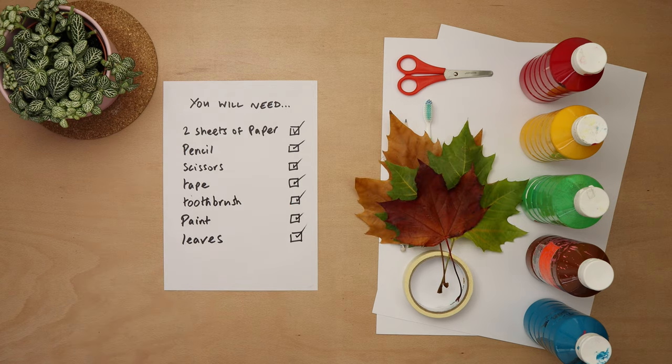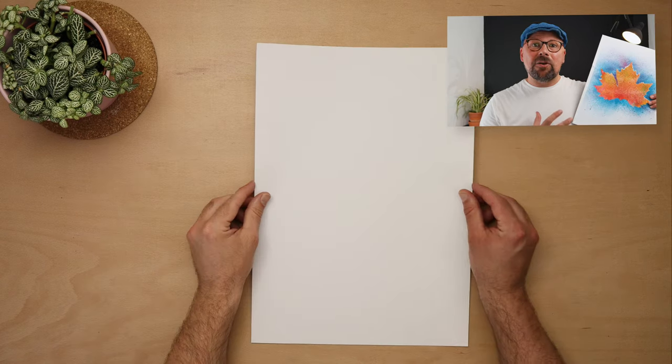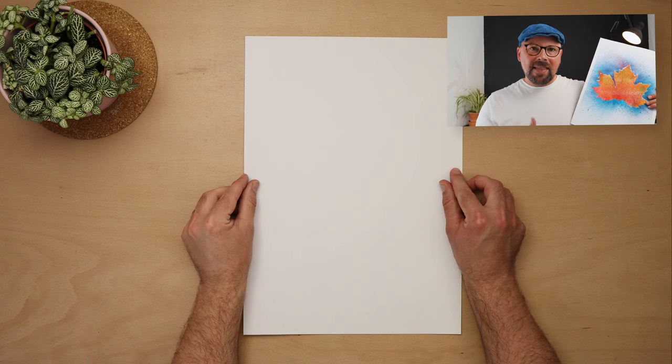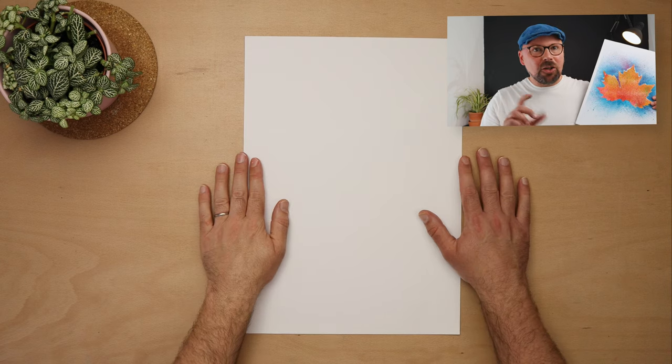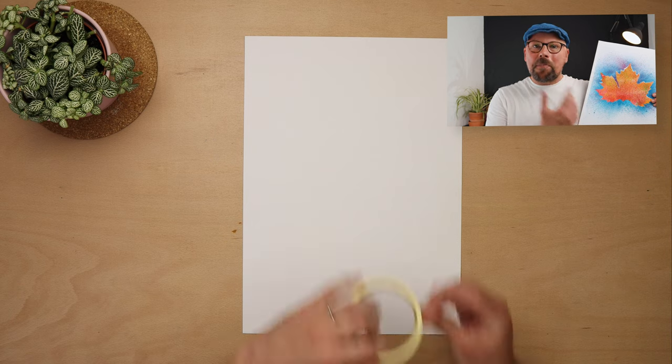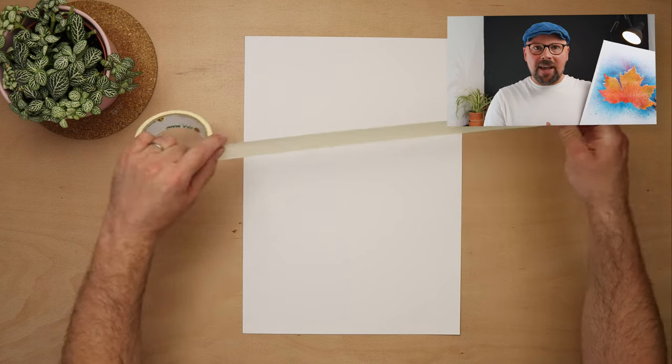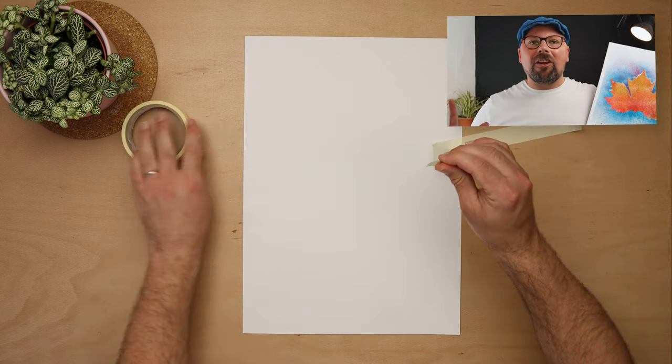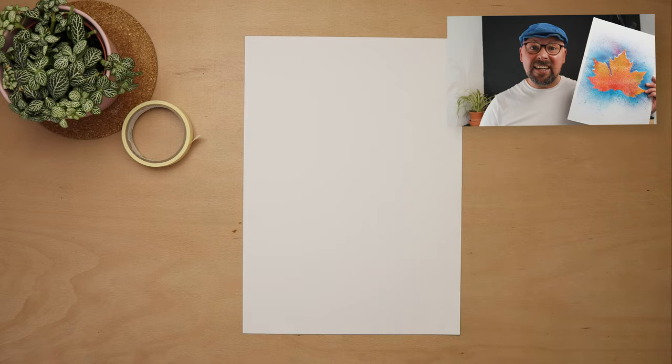Now this could not be easier to make but it's full of skills that young people should be learning. There's a bit of spray painting in there with the toothbrush not with a can, there's cutting out, there's stenciling, there's pattern making, there's observation of nature. It's packed full of learning opportunities and it's really easy.